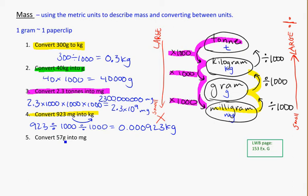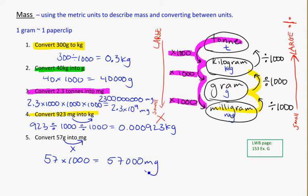Converting 57 grams into milligrams — I'm going from grams to milligrams. Grams are a larger unit, so here I'm going to multiply. Going from big to small, I multiply. From grams to milligrams is only one step, so I do 57 times 1,000, giving 57,000 milligrams. That makes sense: there are 1,000 milligrams in every gram, so 57 grams gives 57,000 milligrams. Going from large to small, I multiply because there are lots of little ones inside.